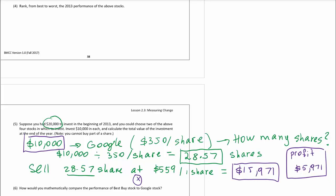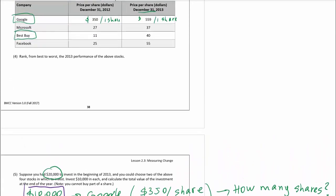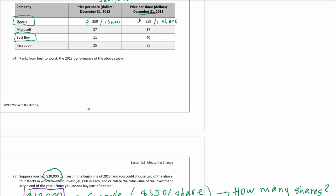Now calculate how much profit you'd get from investing $10,000 in Best Buy. You take $10,000 and invest it in Best Buy at $11 per share. Dividing $10,000 by $11, you get 909.09 shares — lots and lots of shares, like getting coins.